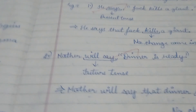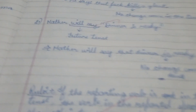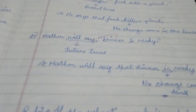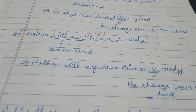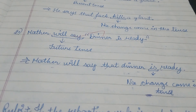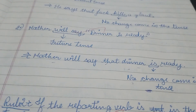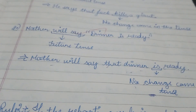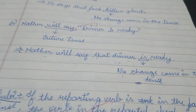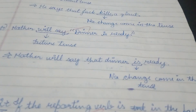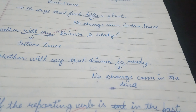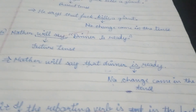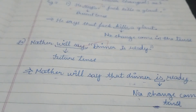For the second example, we take a future reporting verb: 'Mother will say, dinner is ready.' Now, 'will say' is future tense and it is the reporting verb, so 'dinner is ready' will remain in the same present tense. The indirect form is: 'Mother will say that dinner is ready.' No change came in the tense because the reporting verb was in future tense.